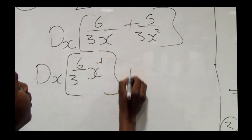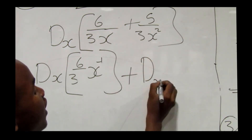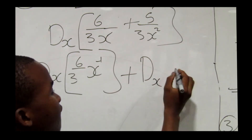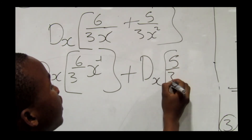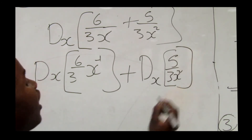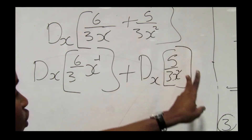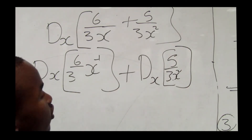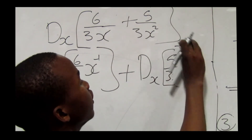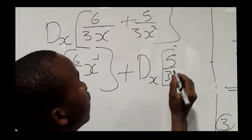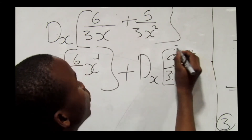Plus d/dx of 5 over 3x squared. Moving x squared to the numerator gives us 5 times x to the power negative 2.